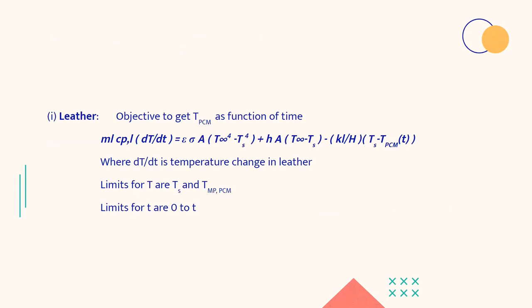Then we deal with separate cases. Firstly for the leather, we need to find the temperature of PCM as a function of time. So firstly, we are dealing with the case that the PCM has not come to its melting point. We are dealing with the case before the PCM attains its melting point and we are calculating the time that is required by the PCM to attain its melting point.